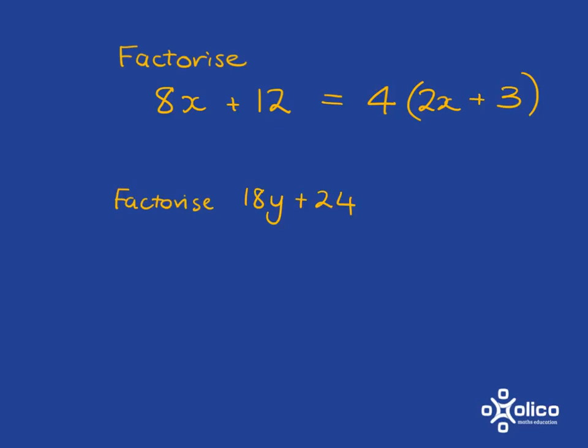Now imagine you were asked to factorise 18y plus 24. You might be able to do it quite easily, but let's go and do it slowly just to show you a process. So we need to find the highest common factor of 18 and of 24, and if you can't immediately identify that, let me just recap with you how to find the highest common factor of two numbers.